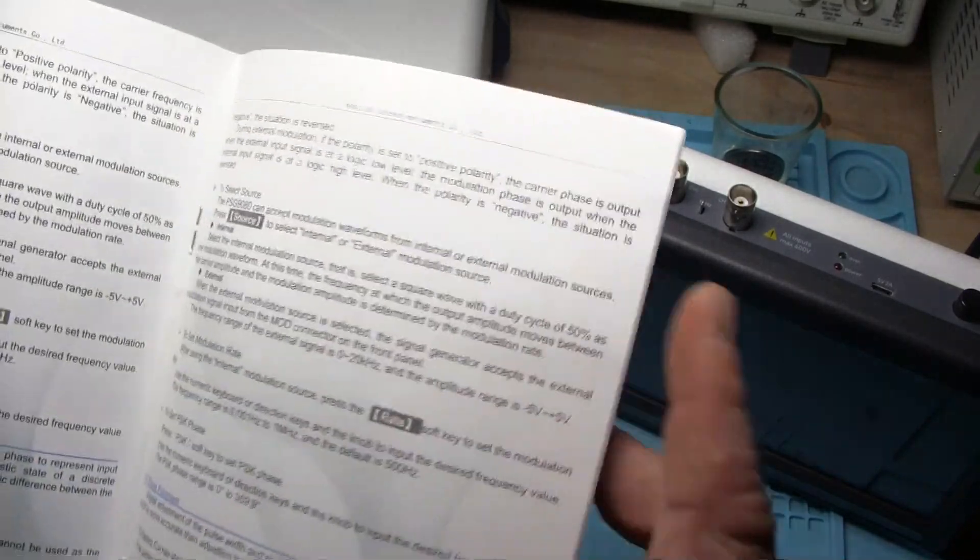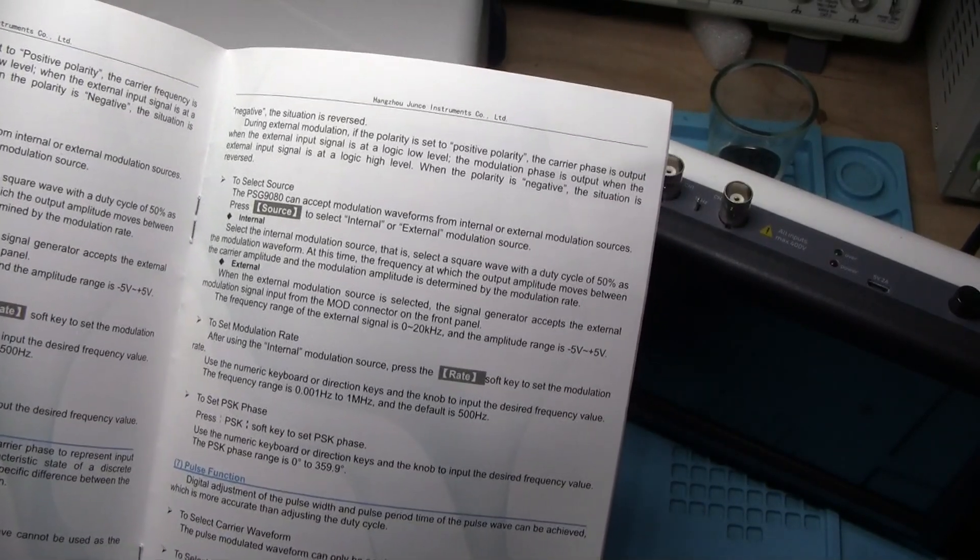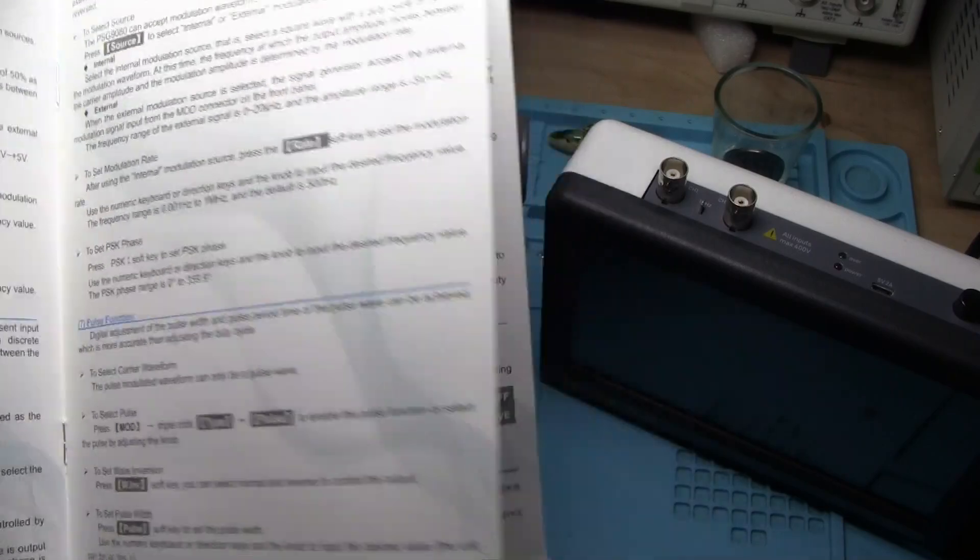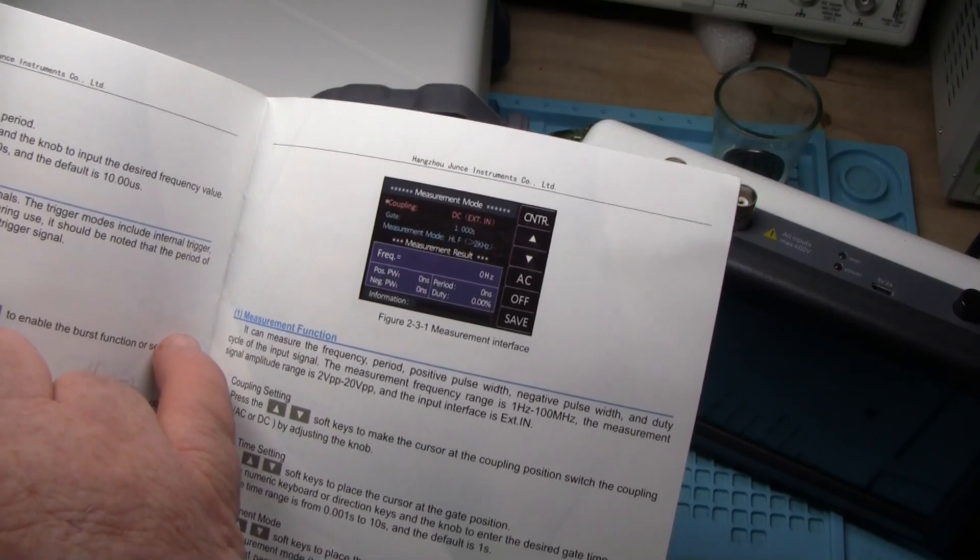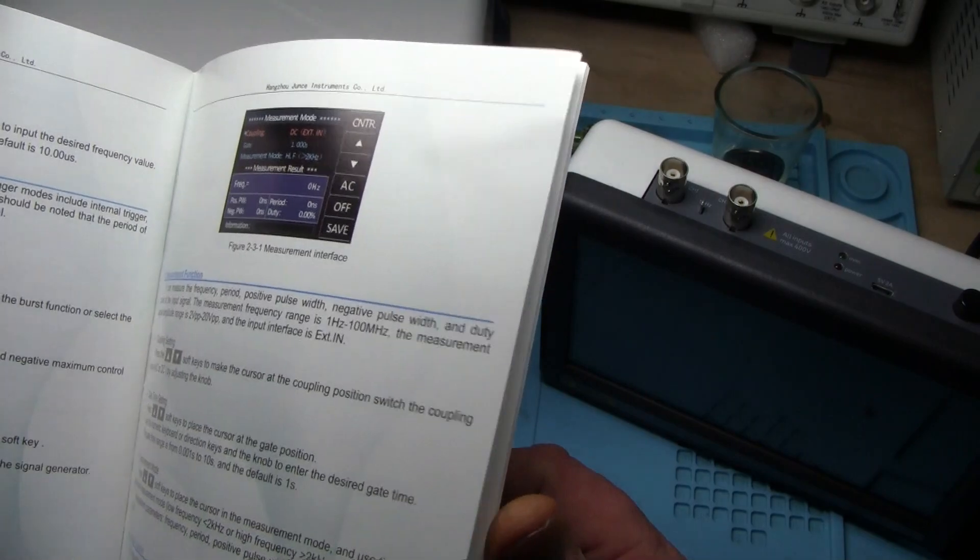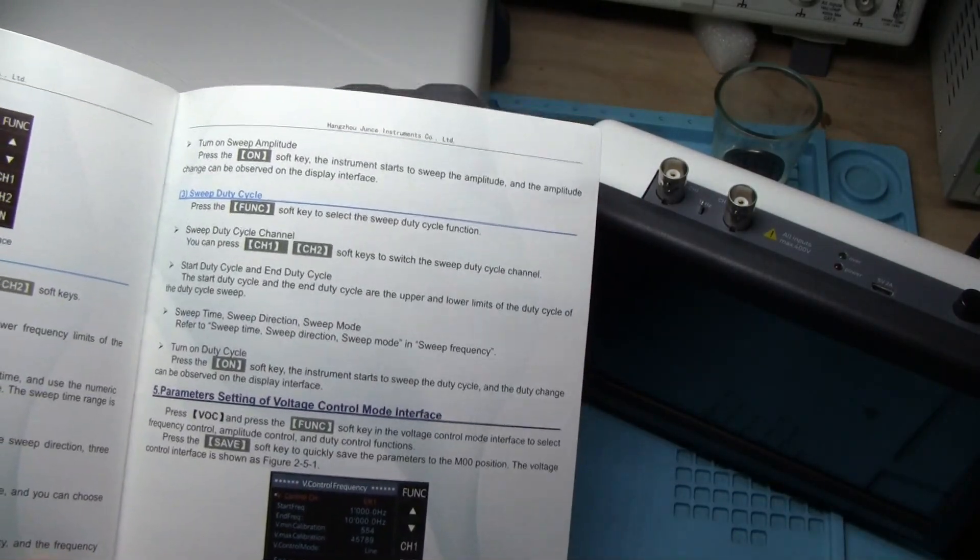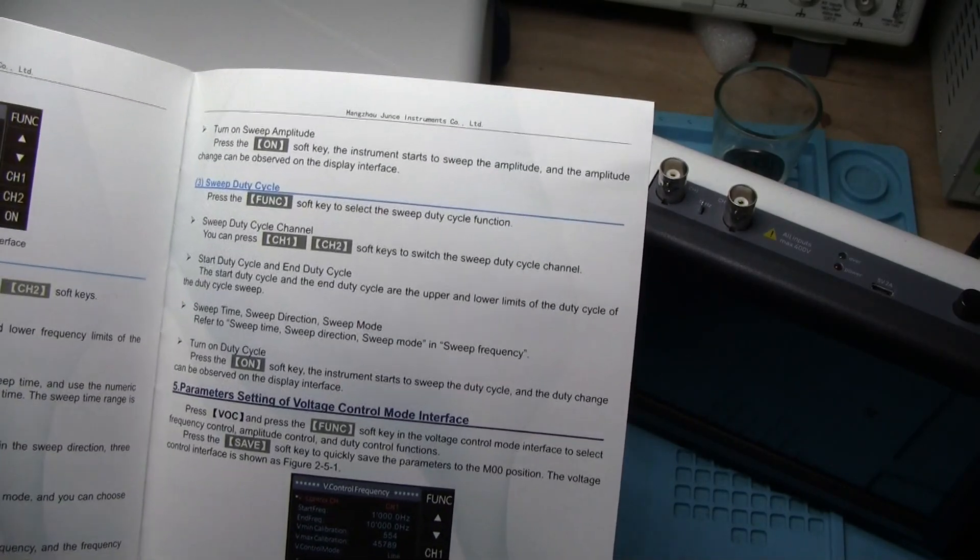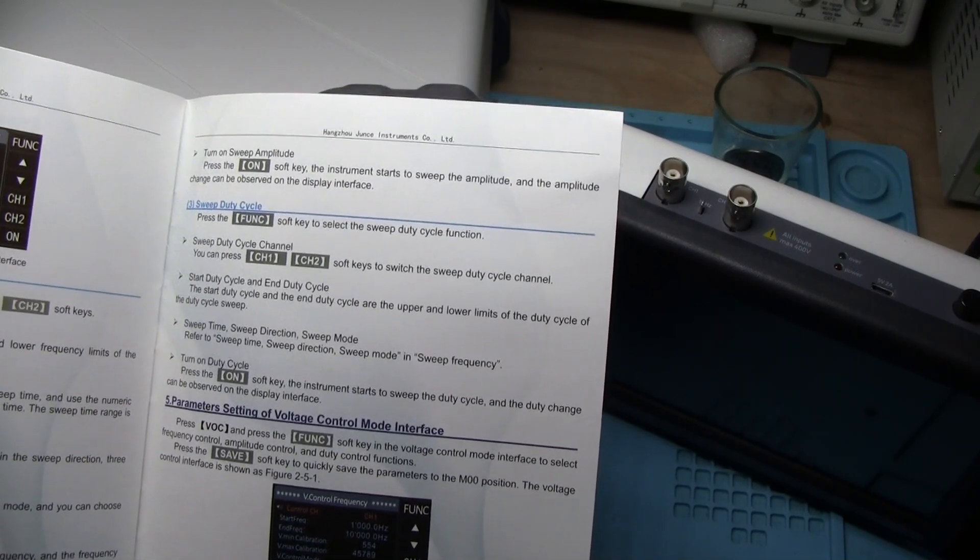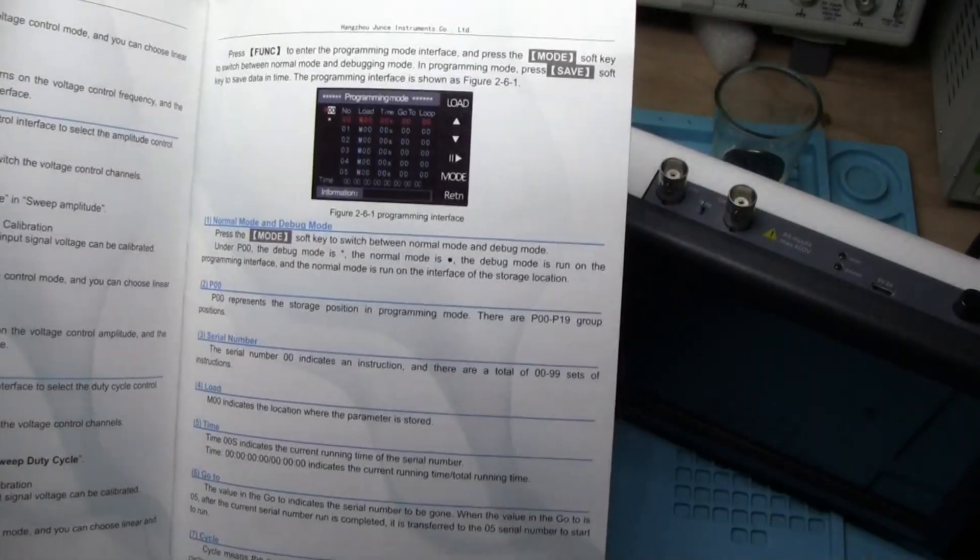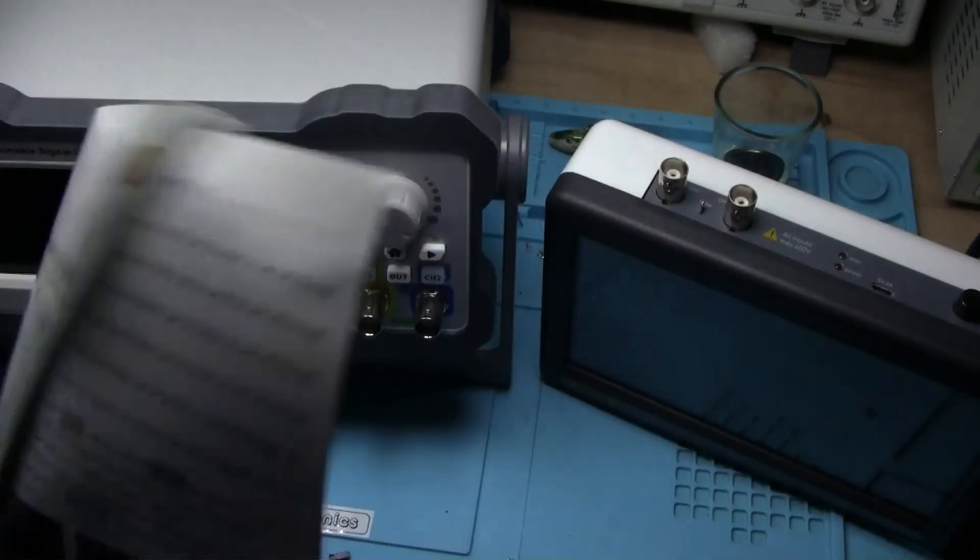We have a pulse function with a pulse range of 0.001 microsecond to 4 seconds, a burst function which can output tens of millions of cycles. It will also work as a frequency measuring device and a counter. It will do sweeps and it also has a VCO voltage controlled interface, so you can control the amplitude with voltage or control the frequency with voltage. Voltage controlled frequency and voltage controlled amplitude. This has a lot of functions.